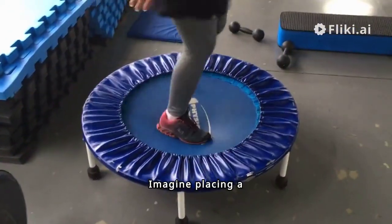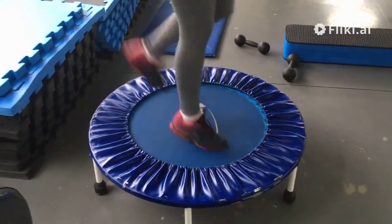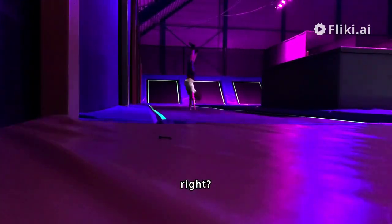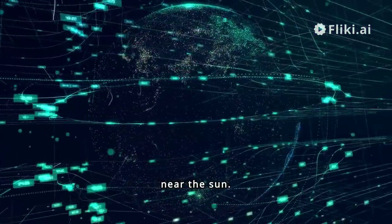Imagine placing a bowling ball on a trampoline. The trampoline bends, right? That's how space bends near the sun.